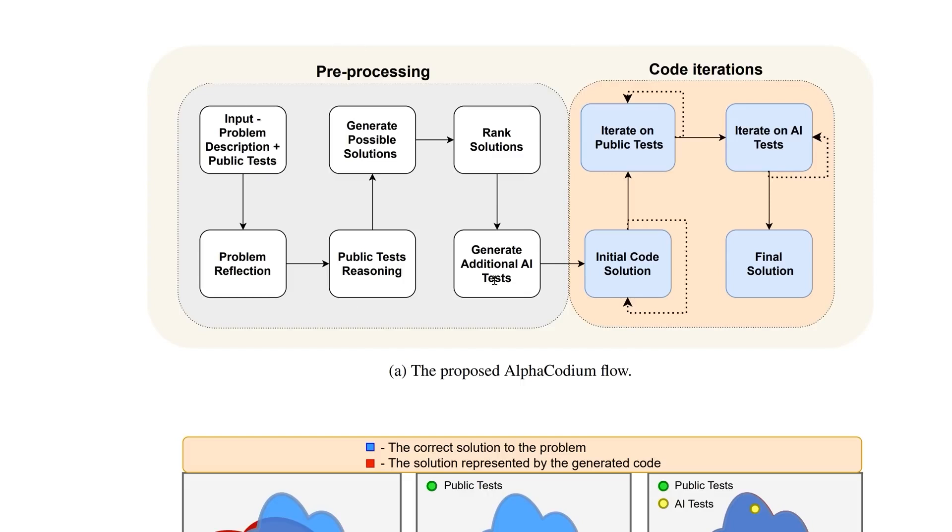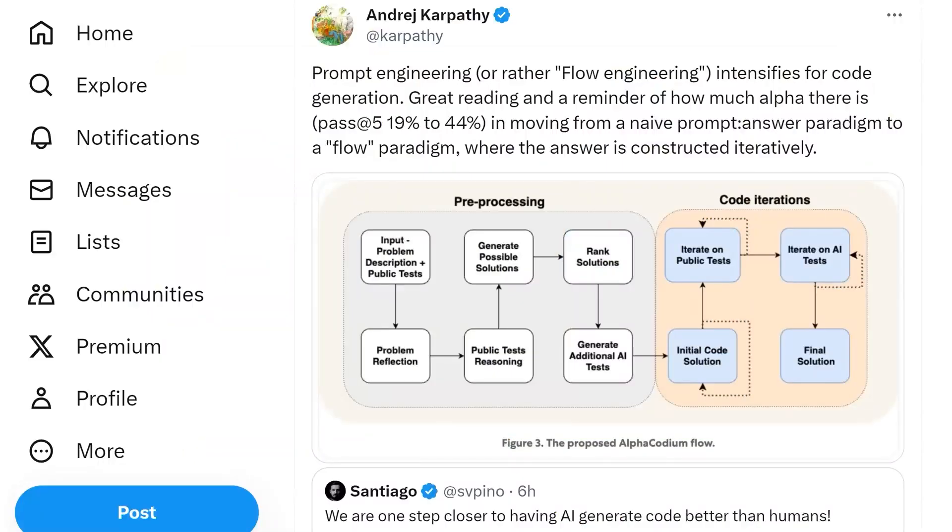But it's also that same theme of LLMs proposing solutions and iterating based on feedback from the environment - in this case, code unit tests. As Andre Karpathy puts it, we are moving away from that naive prompt-to-autoregressive, token-by-token answer where LLMs like GPT-4 are forced to put out immediate solutions.